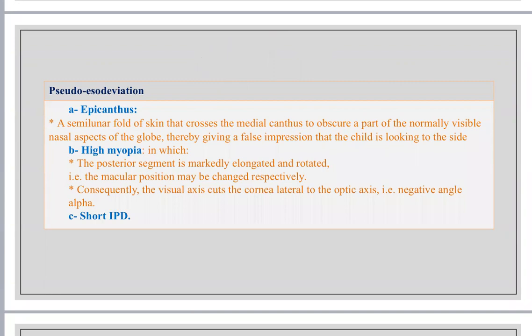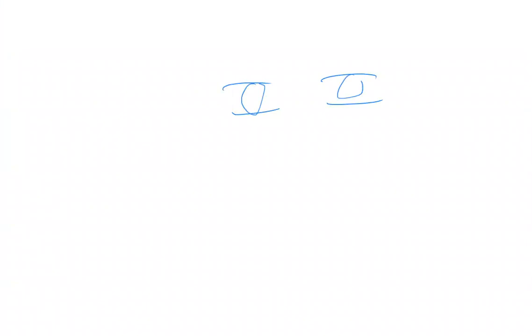Pseudo-esodeviation is caused by three causes. Number one, I may have a very short interpupillary distance. Both eyes are close to each other, which will give a false impression of having strabismus. But actually, the optical axes are parallel to each other. Also, you may have a skin fold called epicanthus, which will also give a false impression of having strabismus.